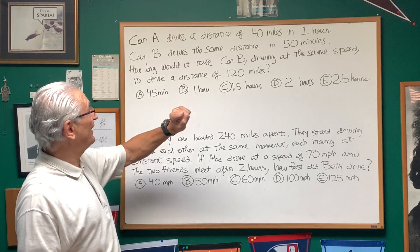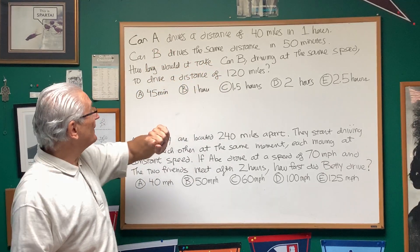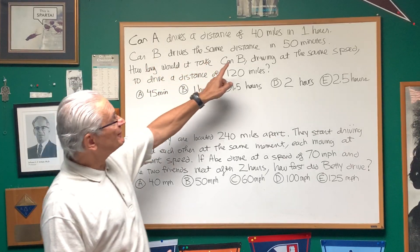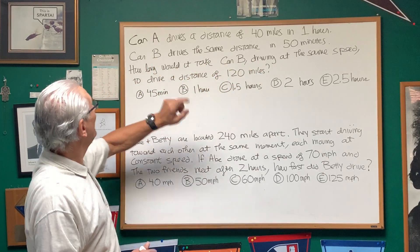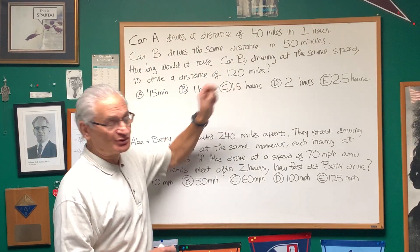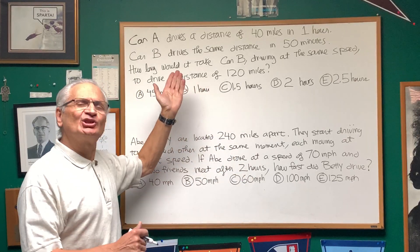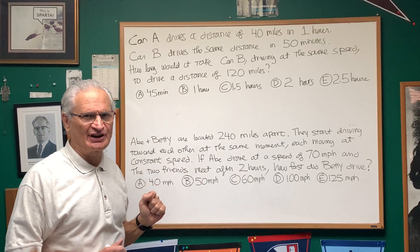So let's read the first problem here. Car A drives a distance of 40 miles in one hour. Car B drives the same distance in 50 minutes. How long would it take Car B, driving at the same speed, to drive a distance of 120 miles? Well, there are a number of ways to do this, and actually it looks more difficult than it actually is.